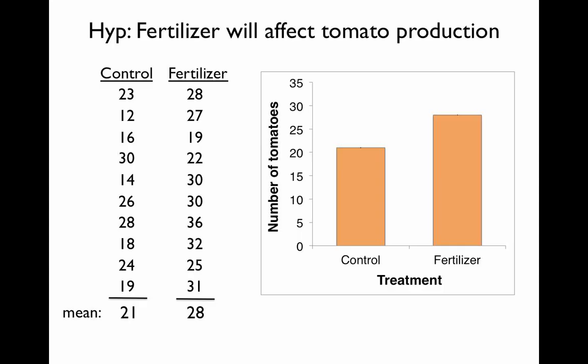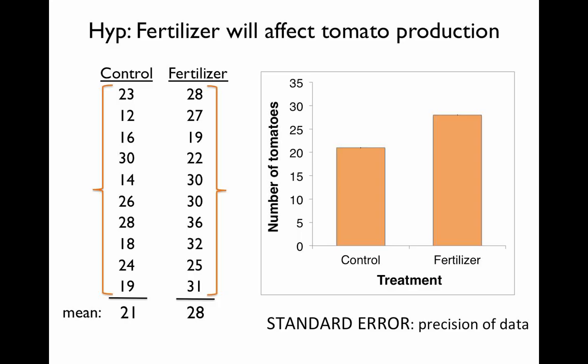To add information about the variation in tomatoes produced within each of our treatments, we can calculate what is called the standard error of each data set. Standard error is a measure of the precision of our data — if there's a lot of variation in the data for a given treatment, the precision was low and the standard error would be high. You won't need to calculate standard error for this class, but there's a link to a useful short video on that topic, which I'll also provide in the YouTube summary.